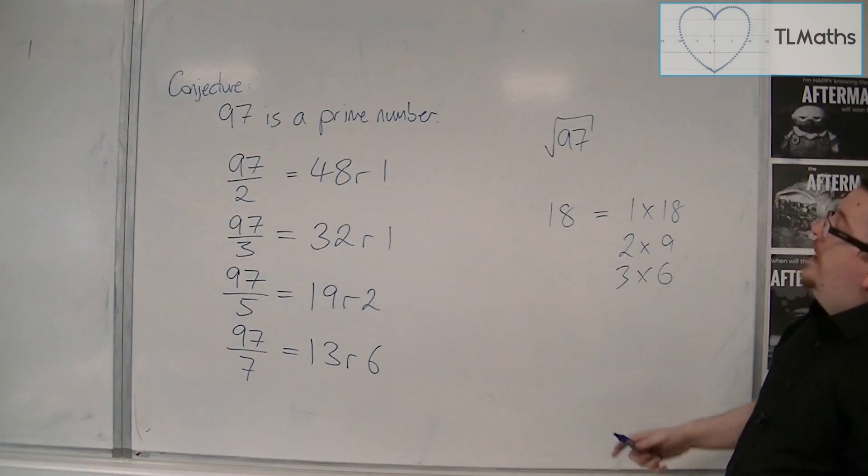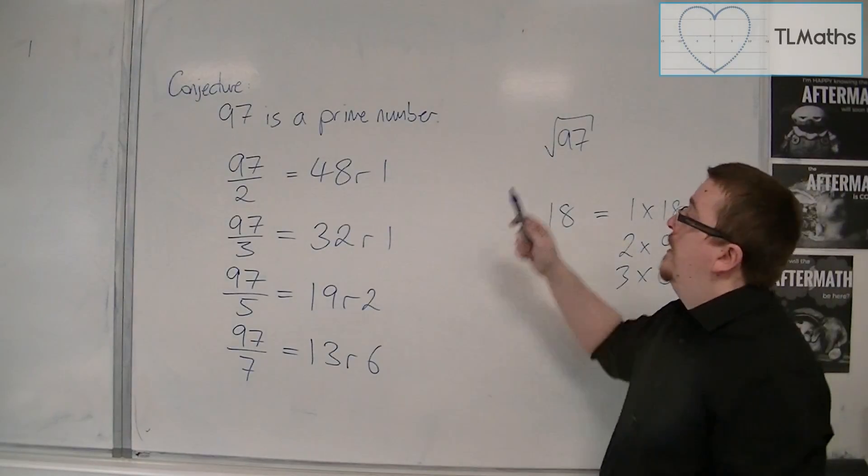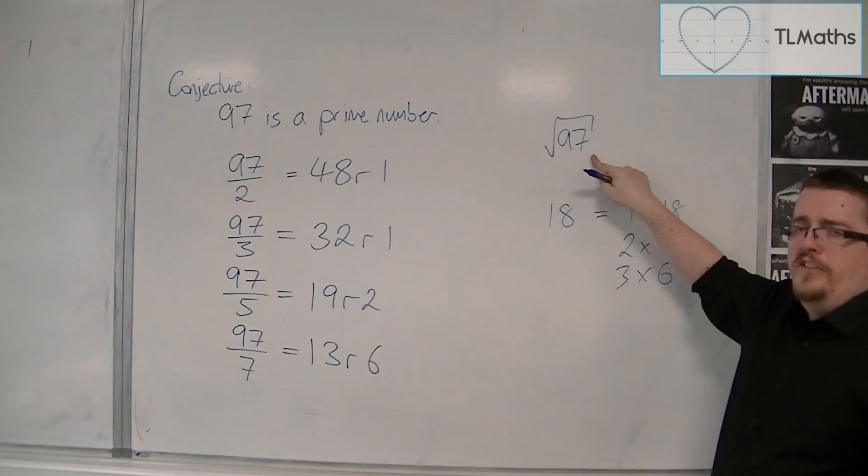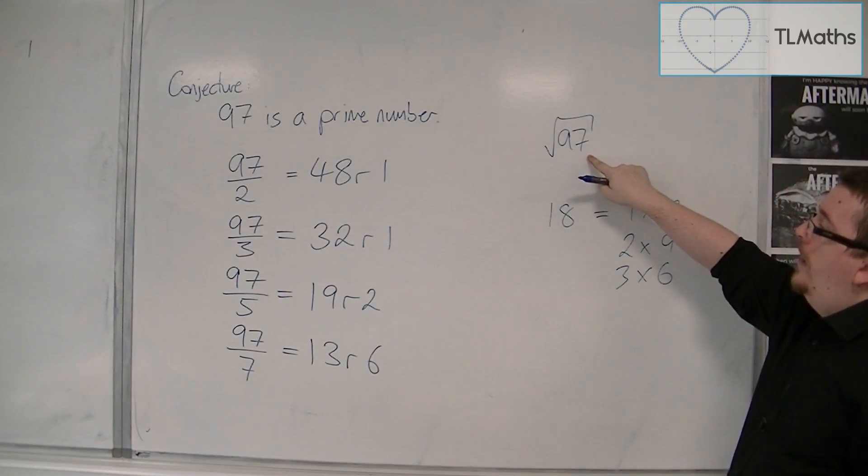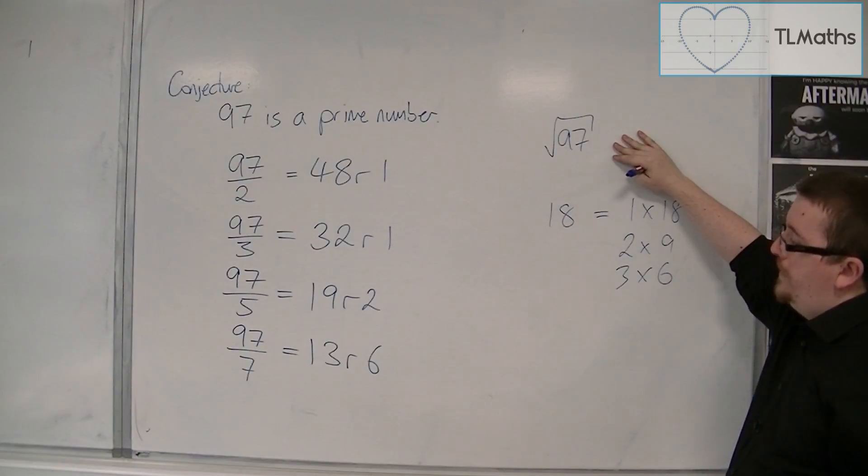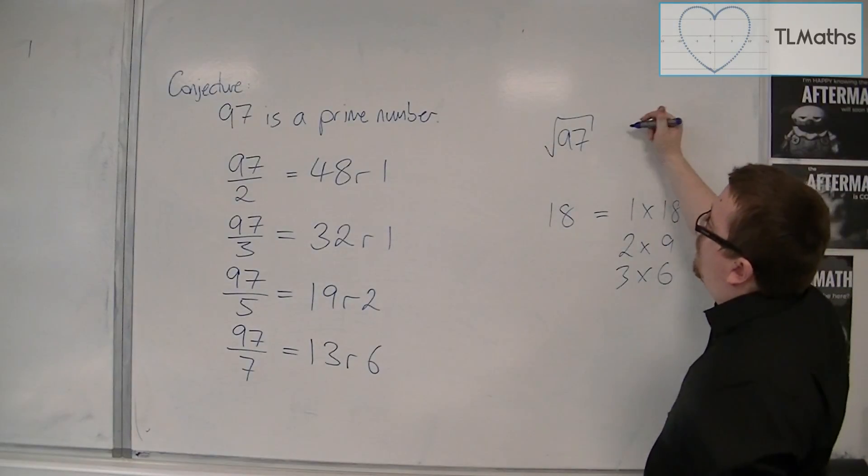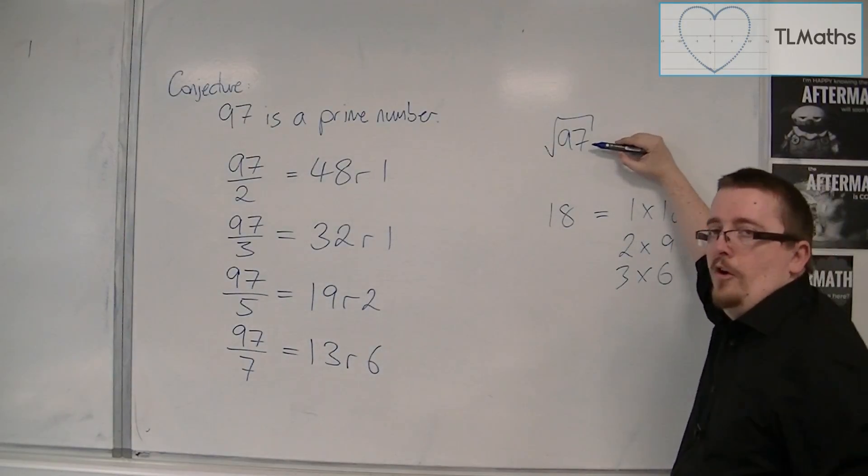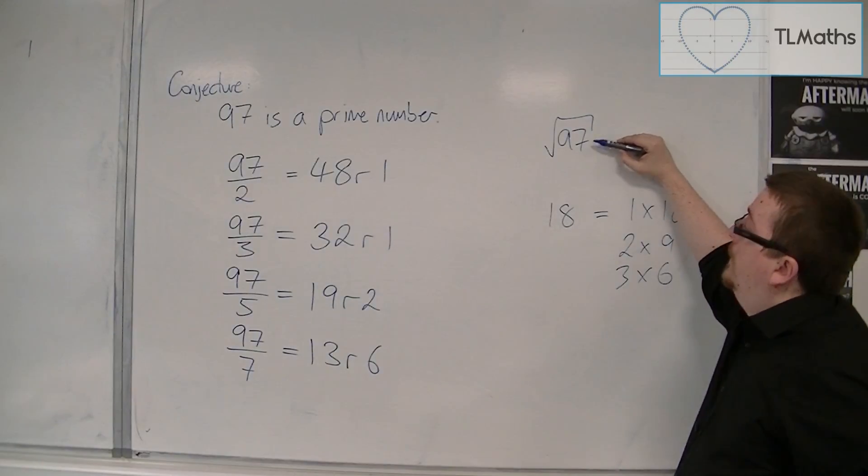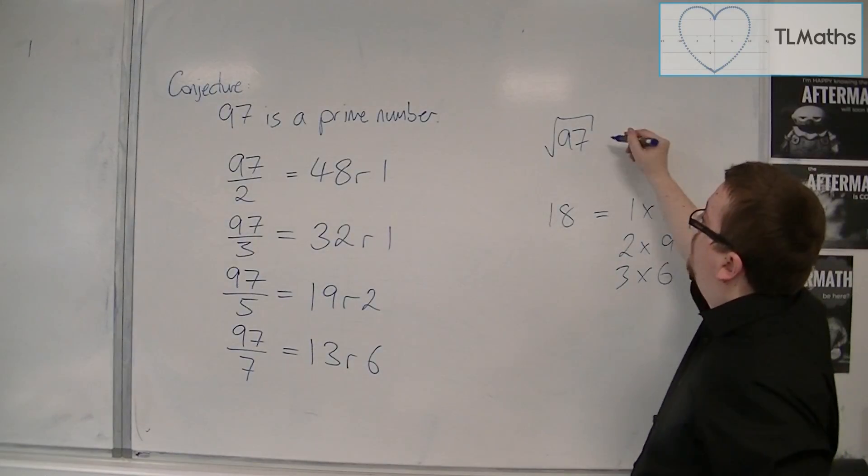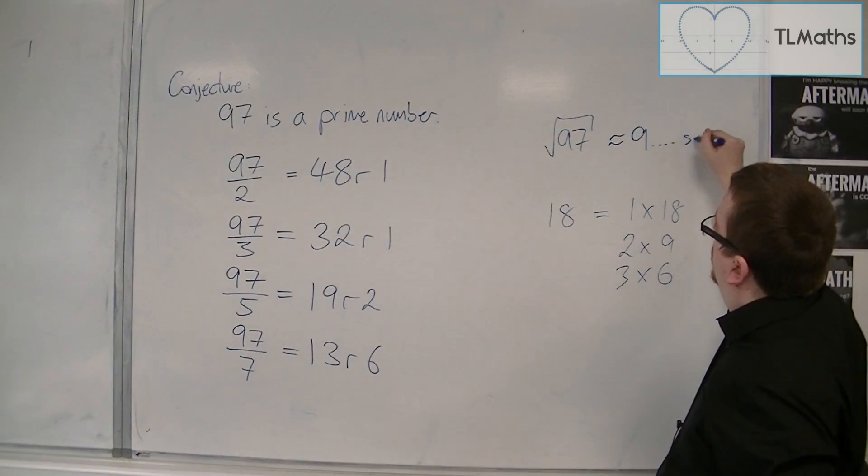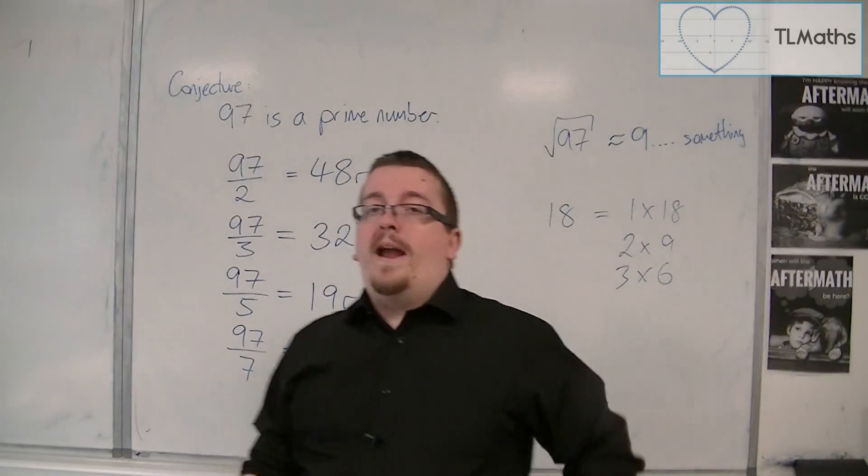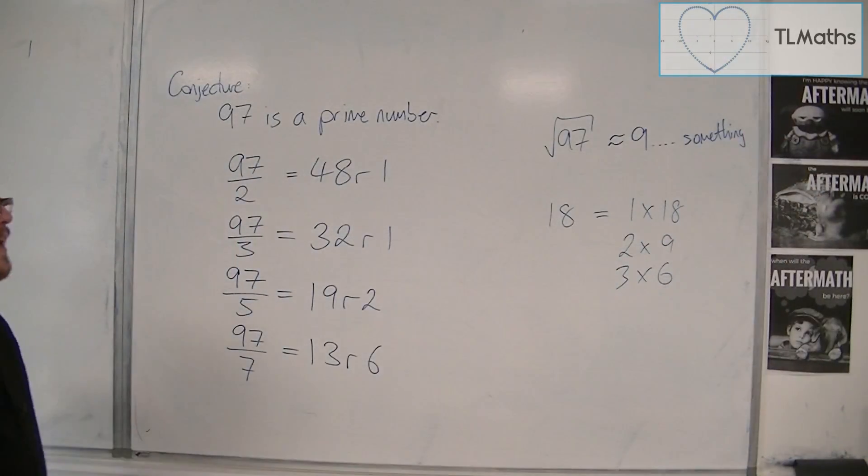So in other words, if I haven't hit a factor below root 97, there won't be any roots, any factors afterwards either. So the square root of 97, well, the square root of 81 is 9, the square root of 100 is 10, and so this must be 9 point something.